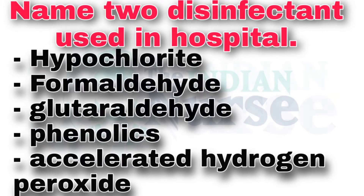Name two disinfectants used in hospital. First one, hypochlorite. Second one, formaldehyde. Third one, glutaraldehyde. Fourth one, phenolics. Fifth one, accelerated hydrogen peroxide. These were the disinfectants used in hospital.